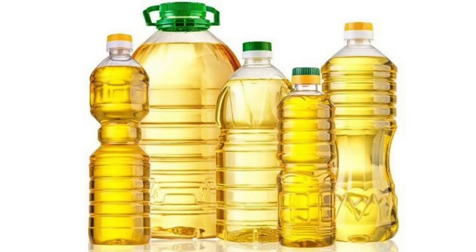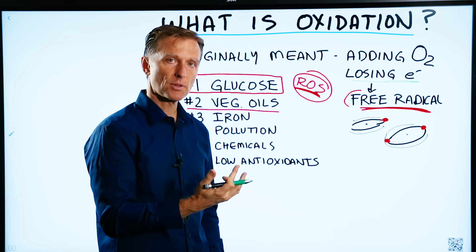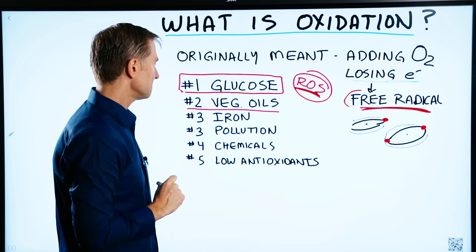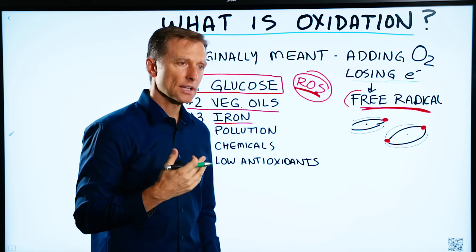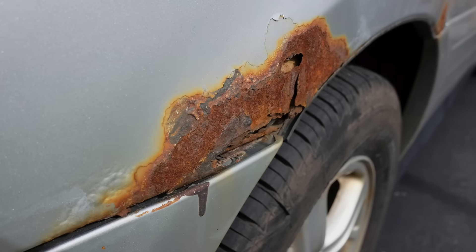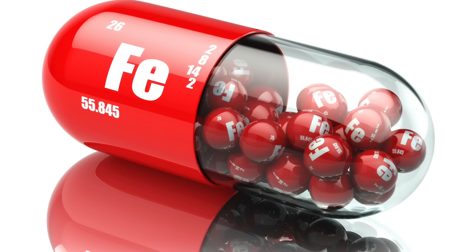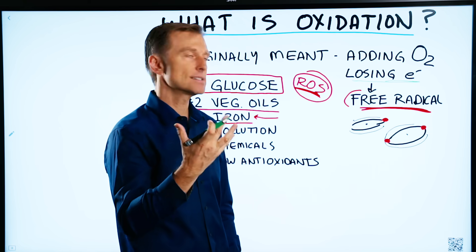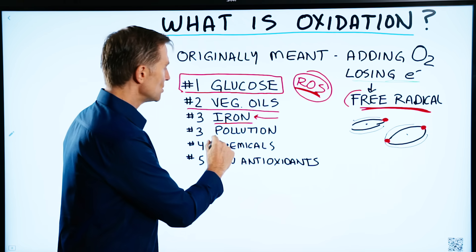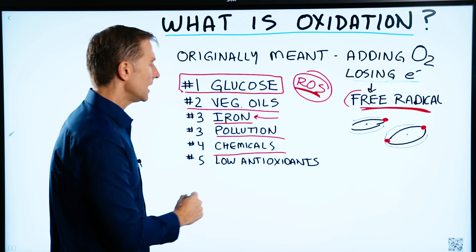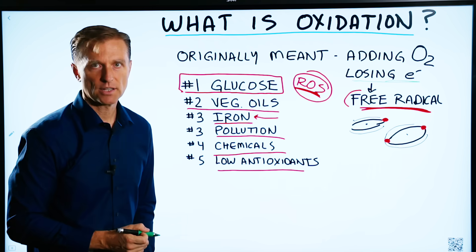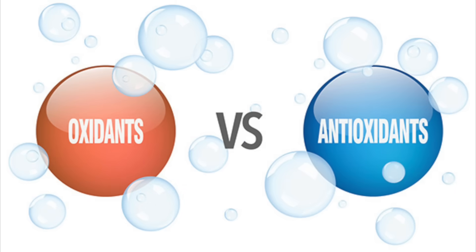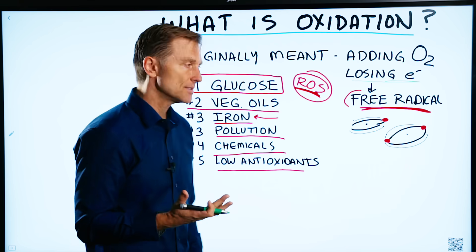Vegetable oils are highly unstable — they're typically an omega-6 fatty acid that becomes very unstable. Then we have iron: think about rust. If you combine oxygen with iron, you get rust. So iron in very high amounts in your body is dangerous because it creates a lot of oxidation — a deficiency is dangerous, but an excess is also very dangerous. Pollution, chemicals in the environment, and low antioxidant intake can all create an imbalance. When you have too much oxidation versus antioxidants, that's called oxidative stress.